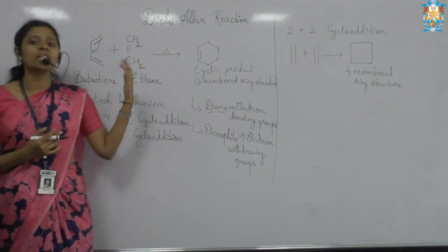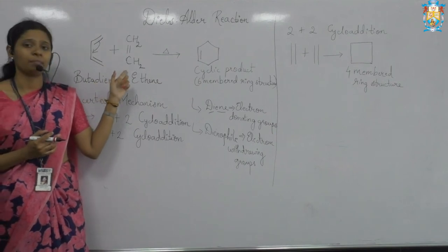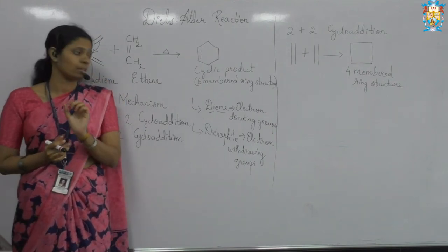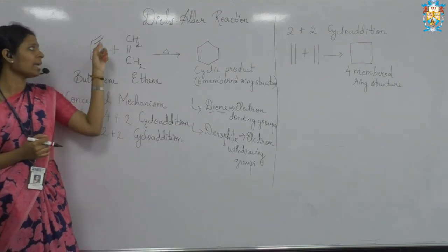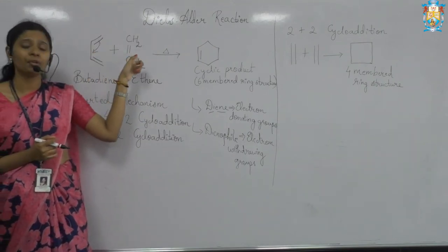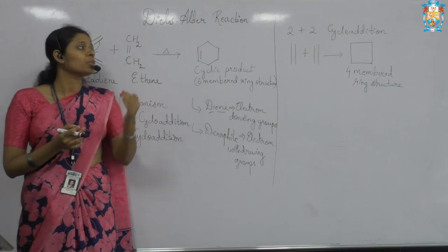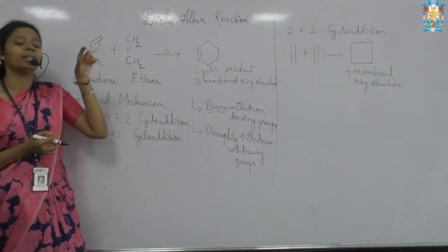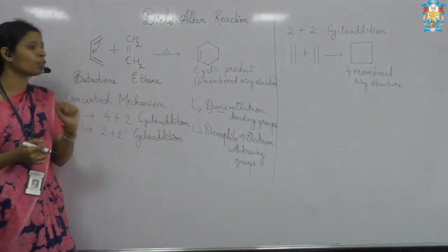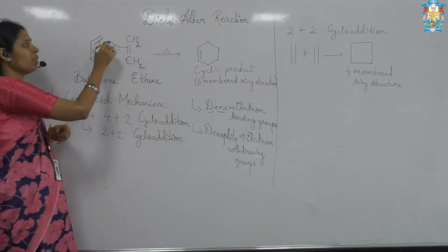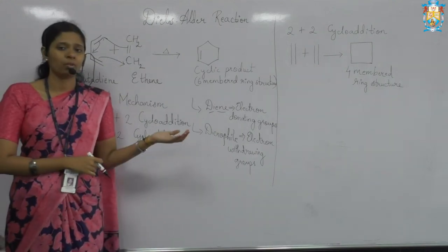So first of all, what is the Diels-Alder reaction? Here we have two things: one is your diene and one is a dienophile. If you observe clearly, the word diene is split as 'di' means two, 'en' means double bond. So in the reactant you have the diene — that is two double bonds — and you have the dienophile. The diene is an electron-donating group; it will donate electrons to the dienophile, and the dienophile will act as an electron-withdrawing group, withdrawing electrons from the diene.